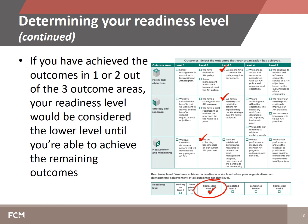In this case, you would say that you have completed level two for policy and governance, because that is the highest level for which you have achieved all of the outcomes. Let's take a closer look at each of the five competency areas, found on pages 8 to 15 of the Asset Management Readiness Scale document.